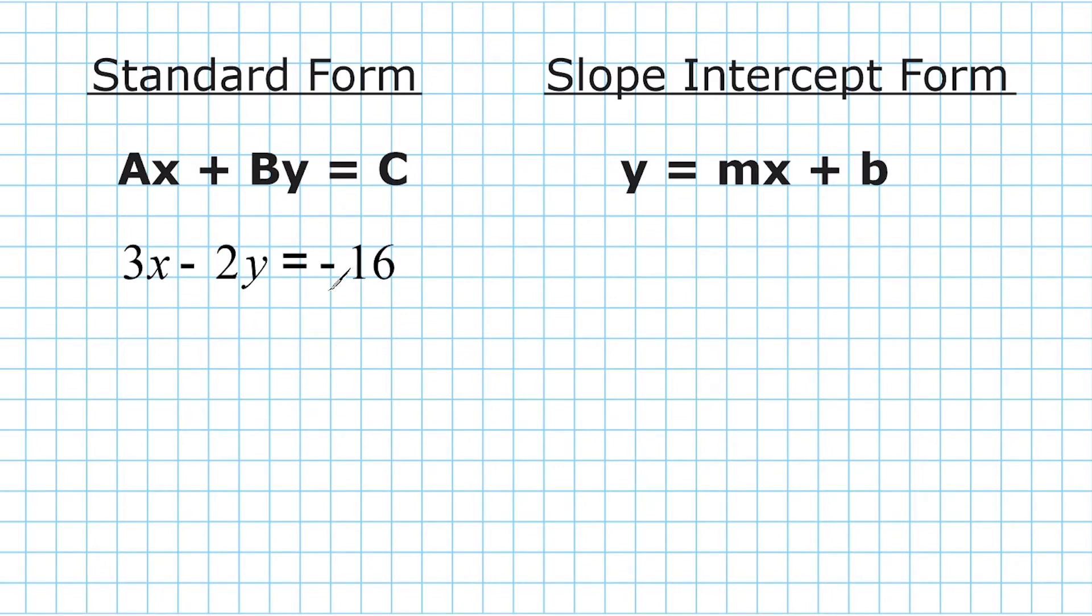All right, right here we have an equation written in standard form. Our Ax term is 3x, we have a coefficient multiplied by x. Our By term is negative 2y, a coefficient multiplied by y. And our C term is negative 16. What we want to do is rewrite this in this form right here. So here's how we're going to accomplish this.